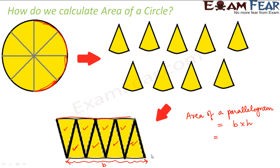The boundaries of those four sectors together make the base of the parallelogram. We know the total boundary of a circle is 2πr. Since we are using only four of the eight pieces — that is, half of the circle — the base equals 2πr divided by 2, which is half of the total circumference. So our base is 2πr/2.